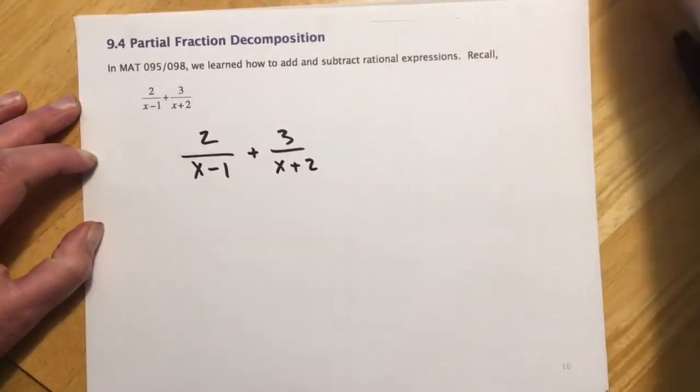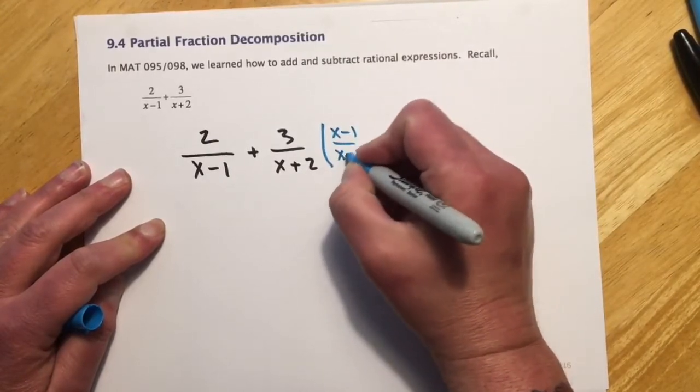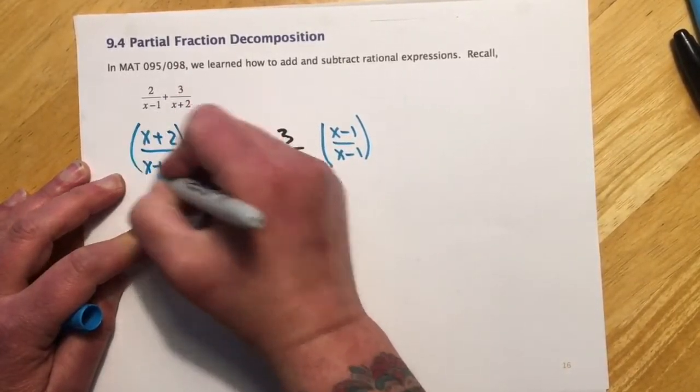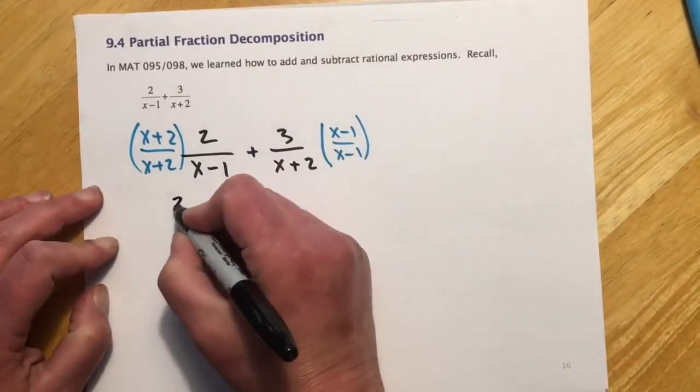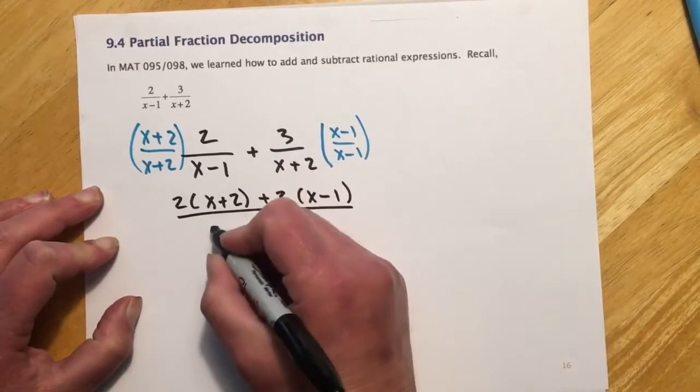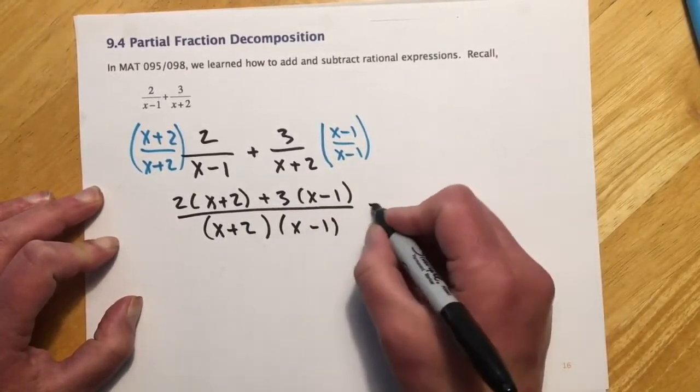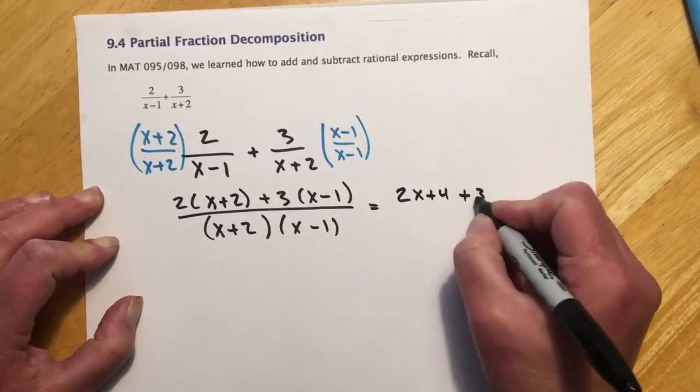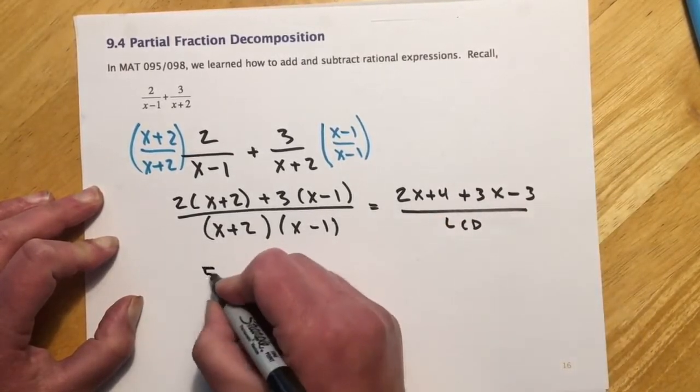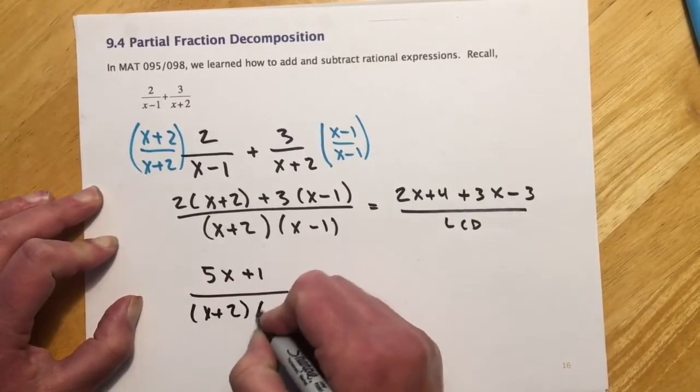So if I have a rational expression and I'm trying to add it, what I need to do is get a common denominator. So I'm going to multiply this side by the x minus 1s, and this side by the x plus 2s. And so then that's going to look like 2(x+2) plus 3(x-1). All of this common denominator now of (x+2)(x-1). And then I distribute and collect terms. So that will be 2x+4 plus 3x-3. I'm just going to write LCD here for the sake of time. And then 2x and 3x makes 5x, and 4 minus 3 makes plus 1 right there. That's (x+2)(x-1).